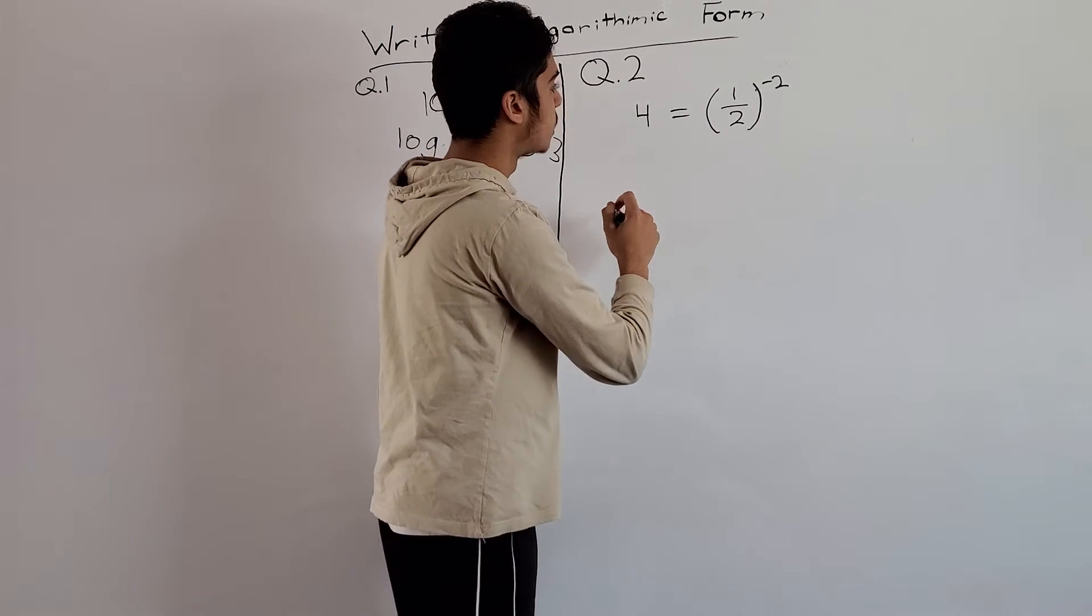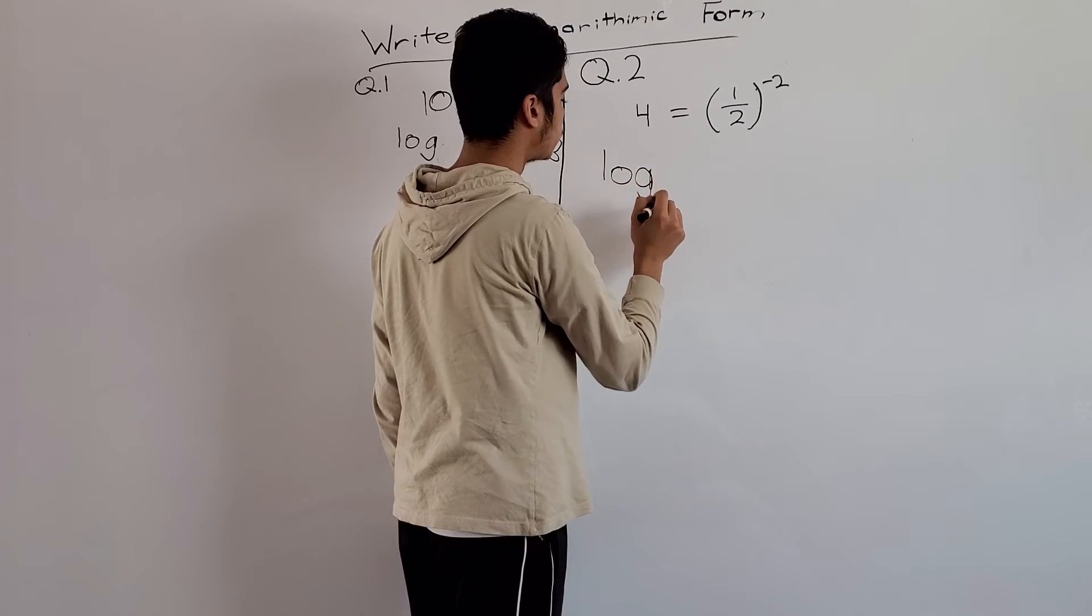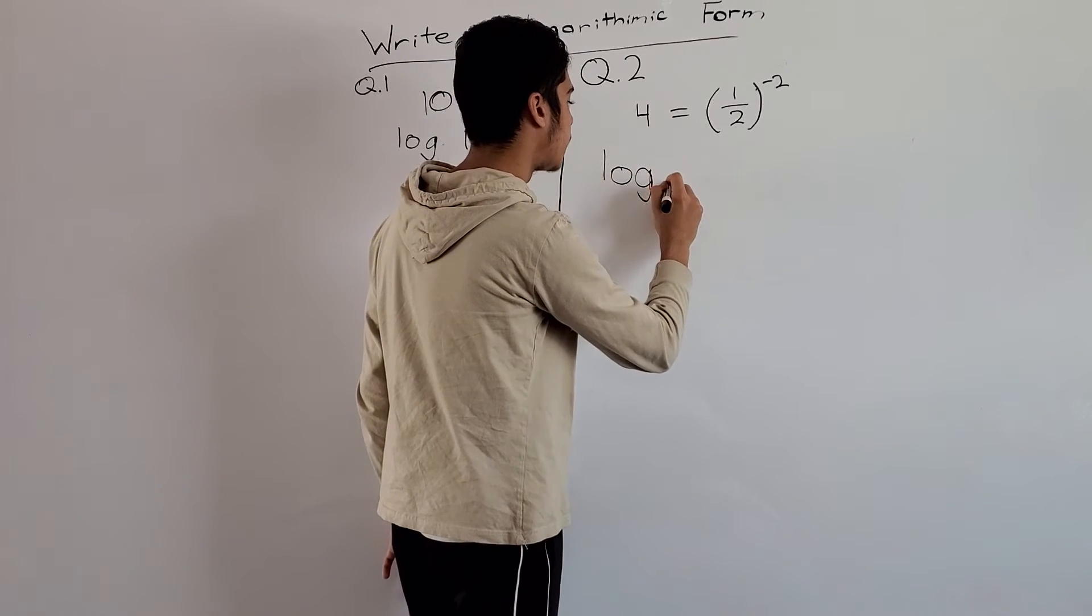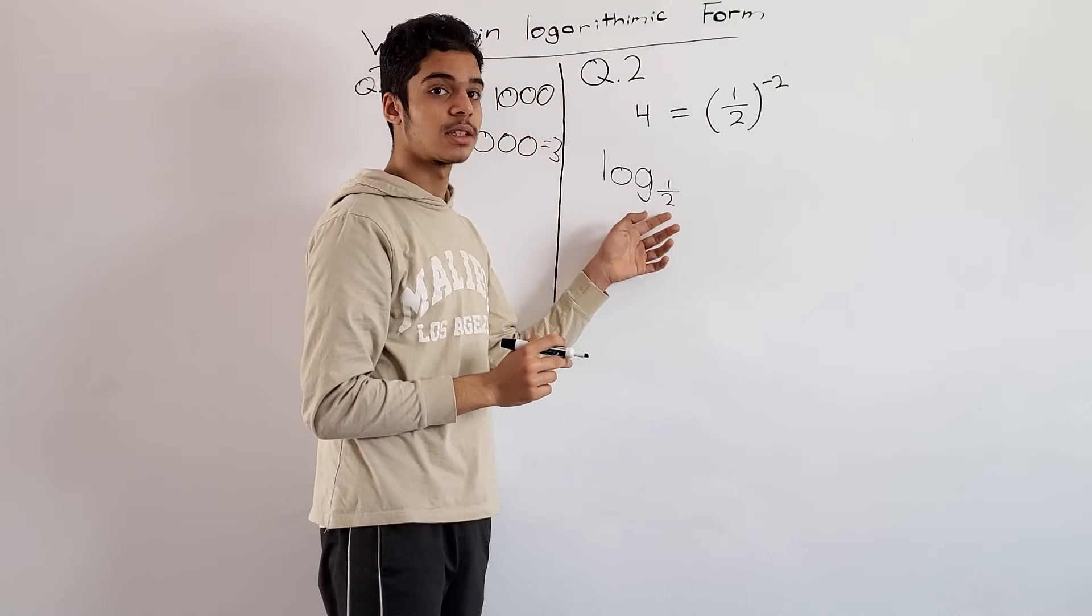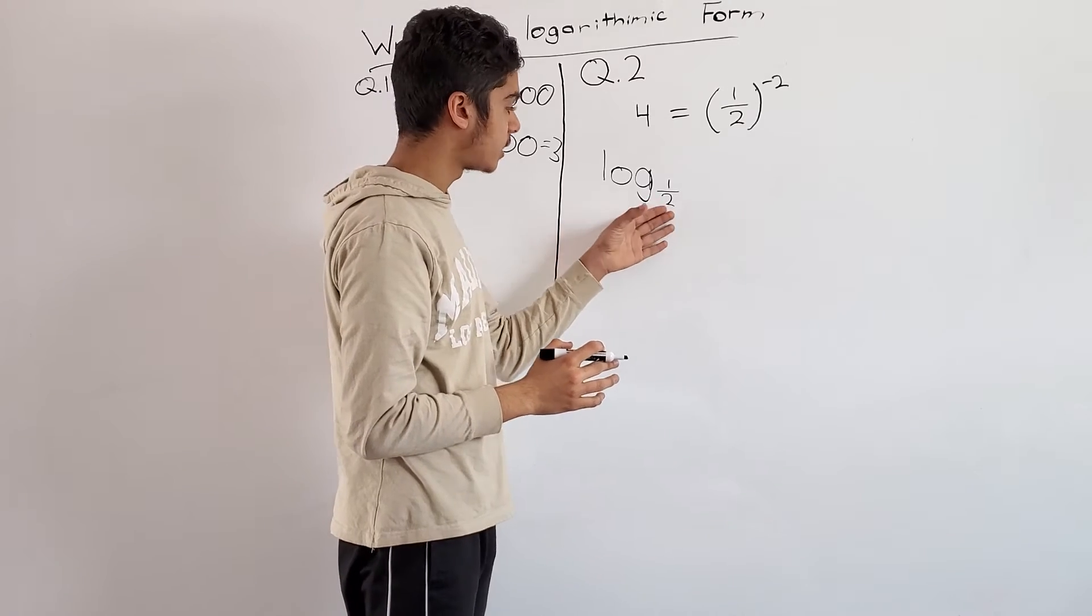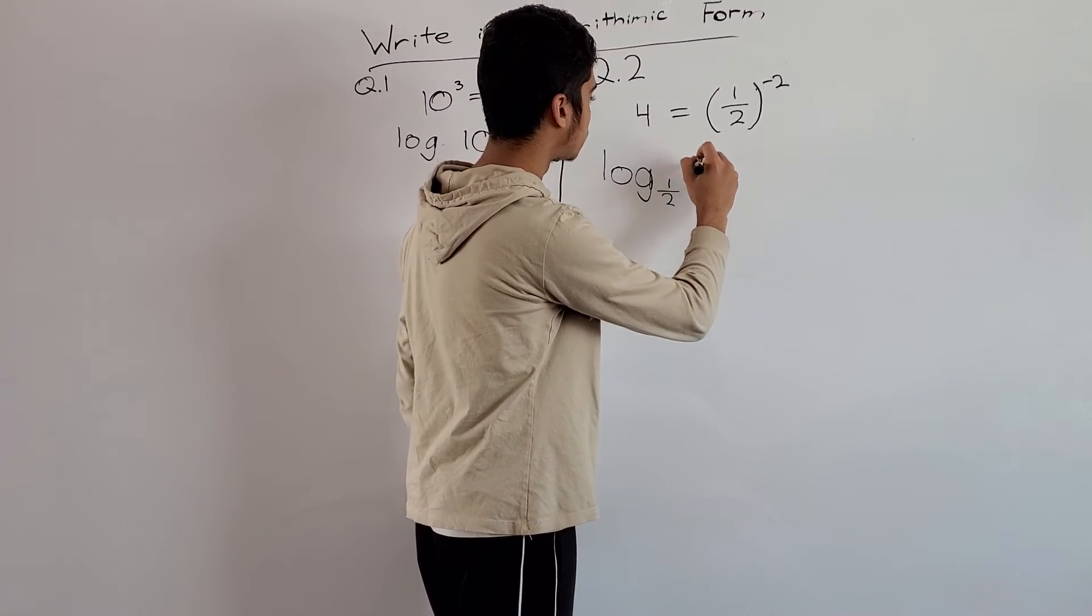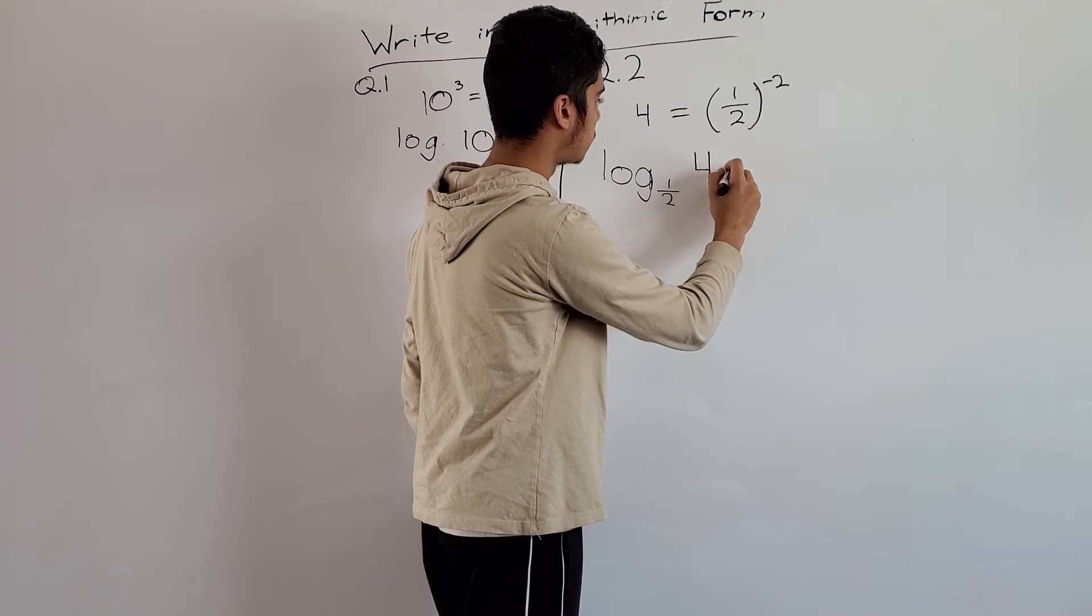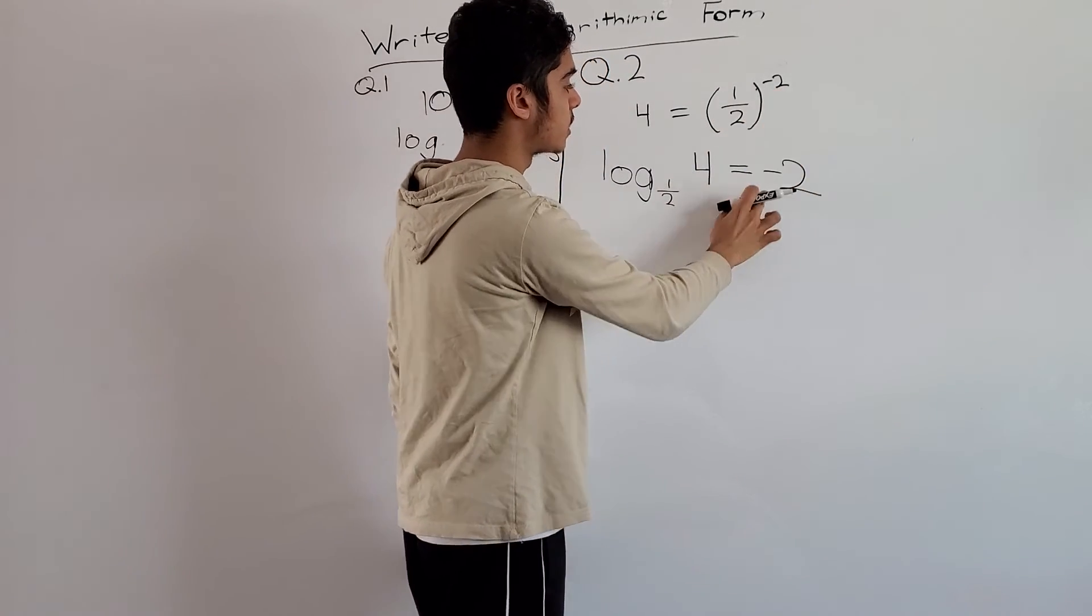To write this, again, write down log. We would write 1/2 here because that's not the common log. You need to write this down here and put 4, that's equal to negative 2. That's our exponent.